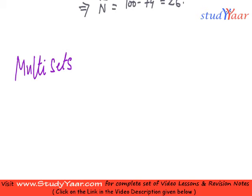We define multiset as a collection in which an element can occur more than once.